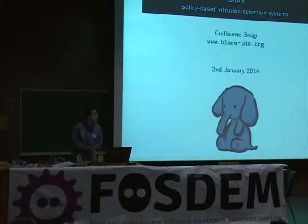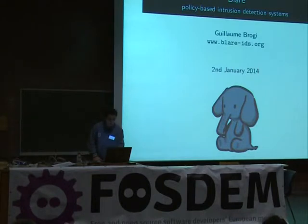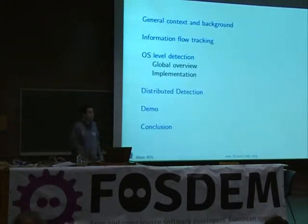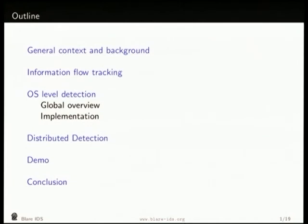Hello, everyone. I'm going to talk to you about Blair. It's a family of two intrusion detection systems, developed at the CIDR team in Supelec in France. First, I'll talk a bit about the IT security context, then a bit more about information flow tracking, what we're doing in the Linux kernel, and then I'll show you a small demonstration and conclude with a few things we want to do.